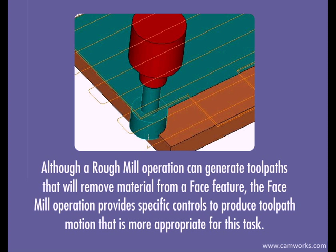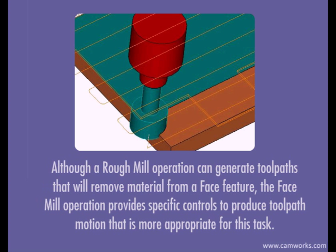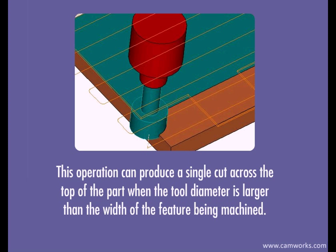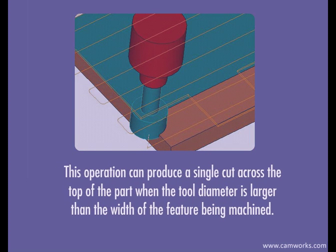Although a rough mill operation can generate toolpaths that will remove material from a face feature, the face mill operation provides specific controls to produce tool path motion that is more appropriate for this task. This operation can produce a single cut across the top of the part when the tool diameter is larger than the width of the feature being machined.